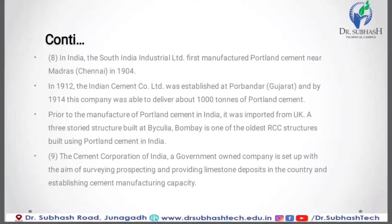The Indian Cement Company Limited was established at Porbandar, Gujarat, and by 1914 this company was able to deliver about 1000 tons of Portland cement. Prior to the manufacture of Portland cement in India, it was imported from the UK. A 3-storey structure built at Byculla, Bombay, is one of the oldest RCC structures built using Portland cement in India. The Cement Corporation of India, a government-owned company, was set up with the aim of surveying, prospecting and providing limestone deposits in the country and establishing cement manufacturing capacity.